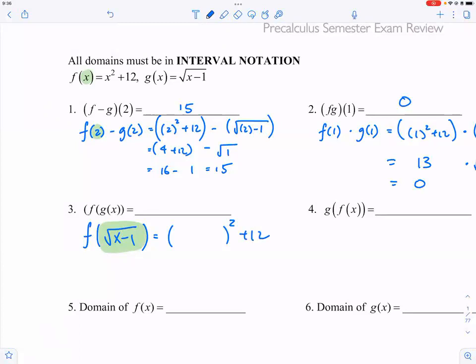So X squared plus twelve. Well, what is the new X? Square root of X minus one. So now you just do the computation. Square root, square, they cancel each other out. So X minus one plus twelve is equal to X plus eleven.